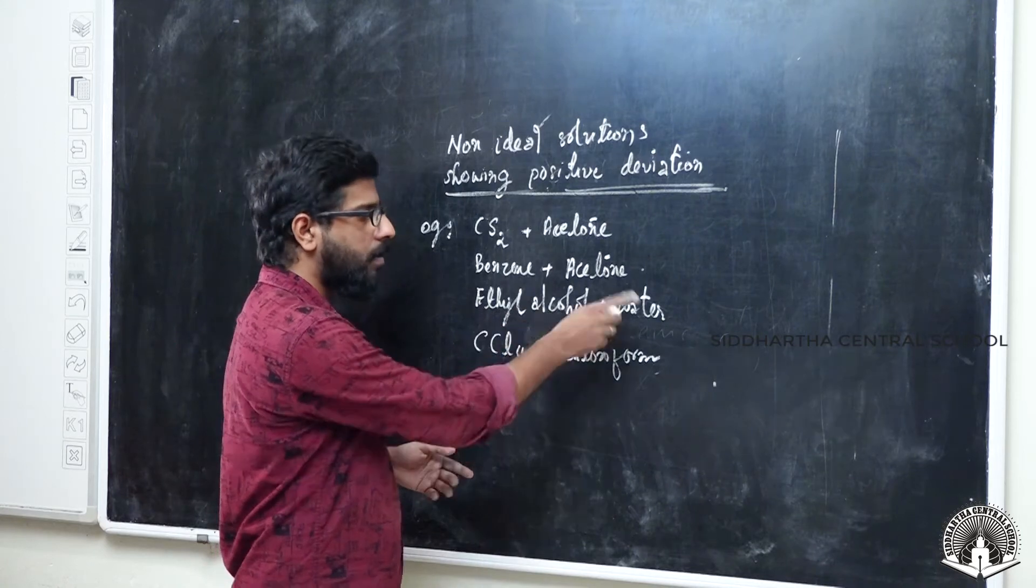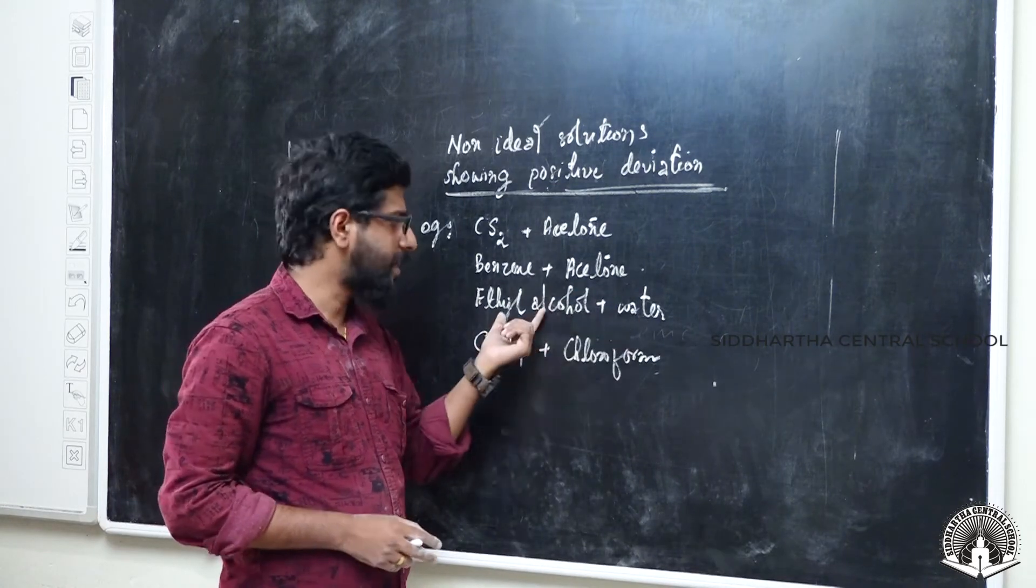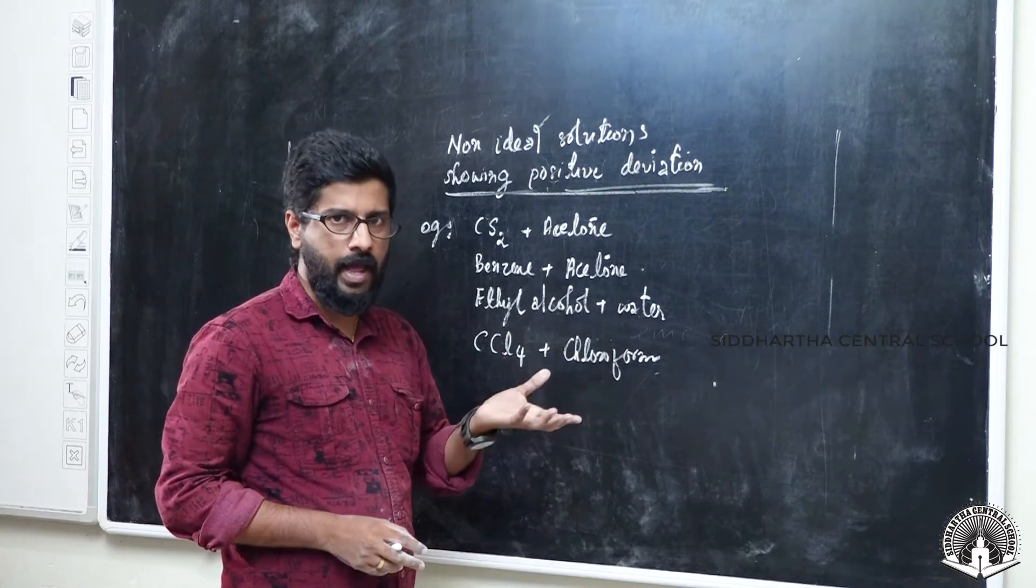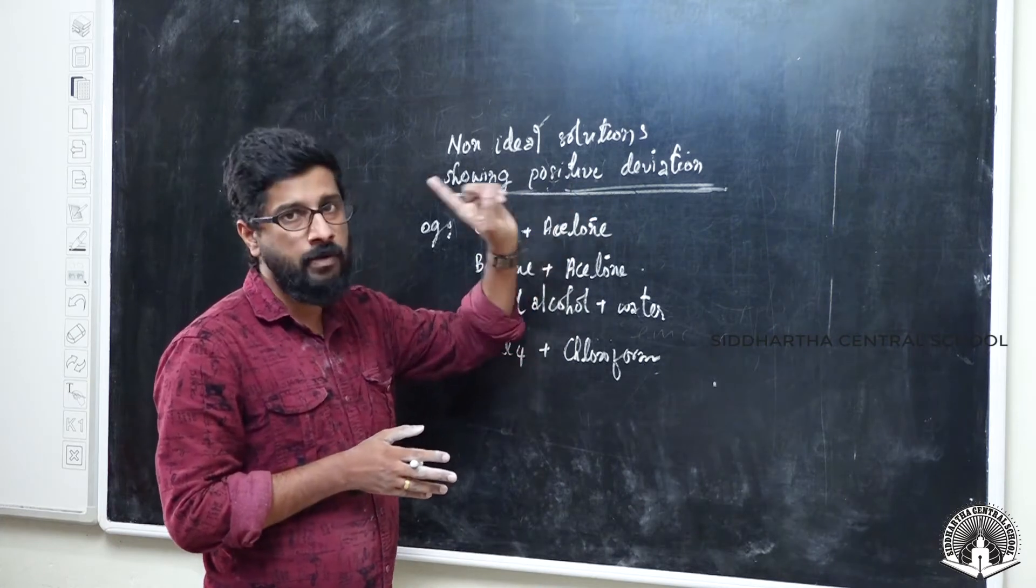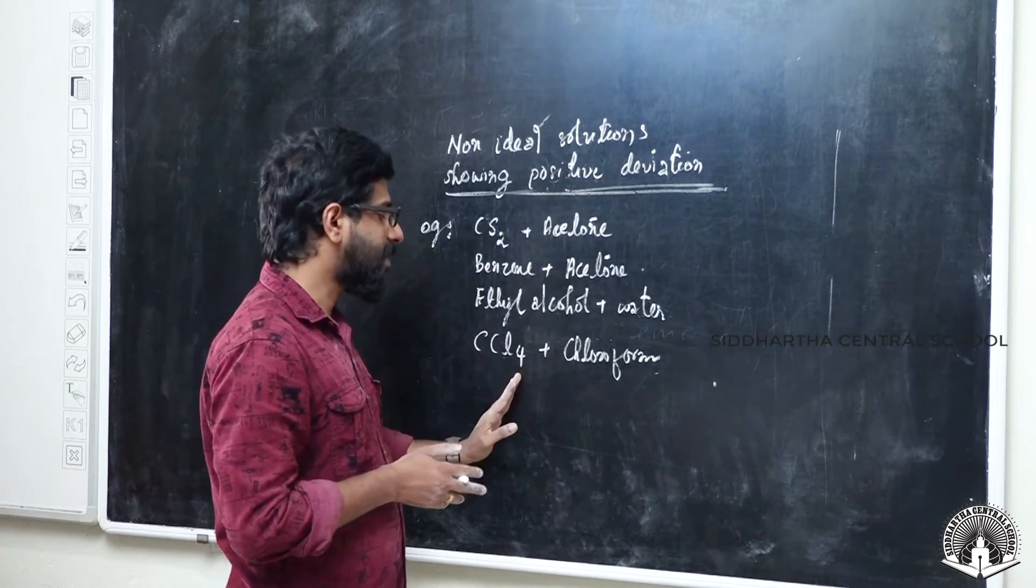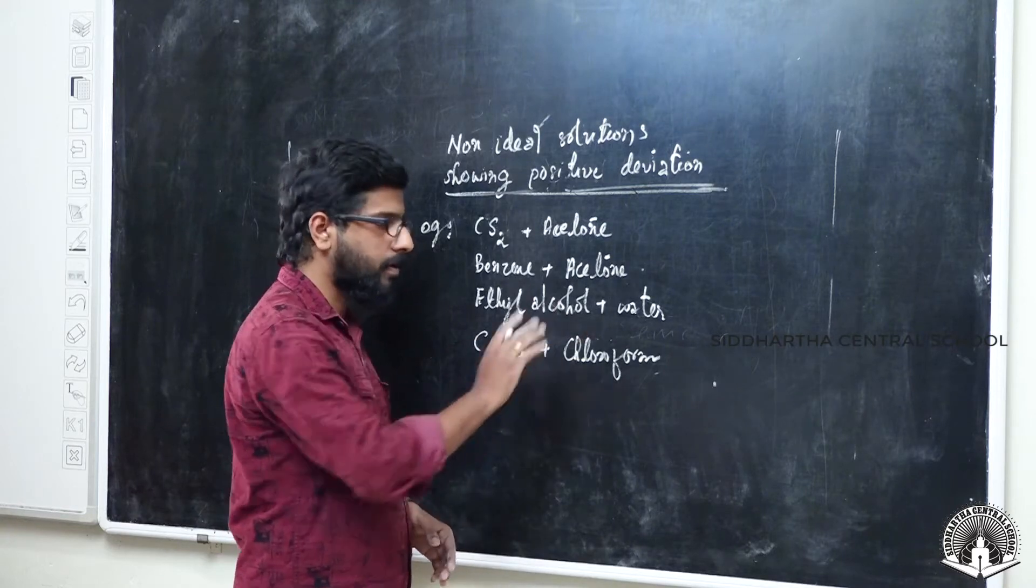Third example: ethyl alcohol plus water. Ethanol and water mixed together form a non-ideal solution showing positive deviation. Last example: CCL4, carbon tetrachloride, plus chloroform. Carbon tetrachloride and chloroform mixed together.